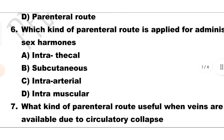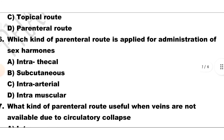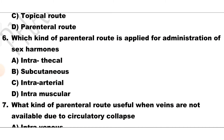Question number 6. Which kind of parenteral route is applied for administration of sex hormones? Options include intravenous, intrathecal, subcutaneous, intraarterial, or intramuscular. The answer is Option D, intramuscular. Sex hormones are administered via intramuscular injection.